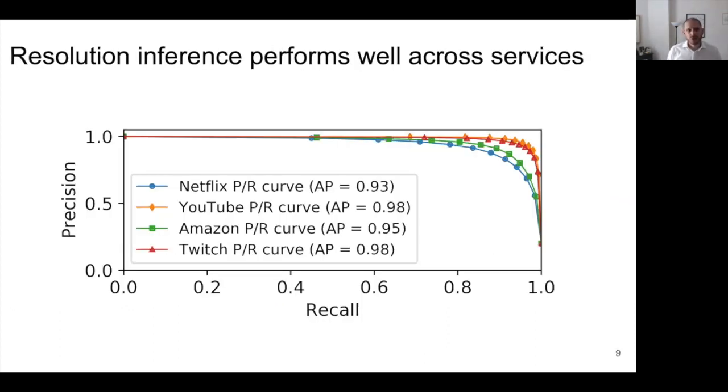We then study the accuracy for each video service using the best performing model, the one using network plus application features. We see that overall, the precision and recall are above 81% across all services. The accuracy of the resolution inference model is particularly high for YouTube and Twitch, with an average precision of 98% for both services. The accuracy is slightly lower for Amazon and Netflix, but this is probably due to the fact that these services change the resolution more frequently to adapt to network conditions. Whereas YouTube and Twitch often stick to a single, most likely lower resolution for a longer period of time, making it easier for the model to correctly infer the current resolution.